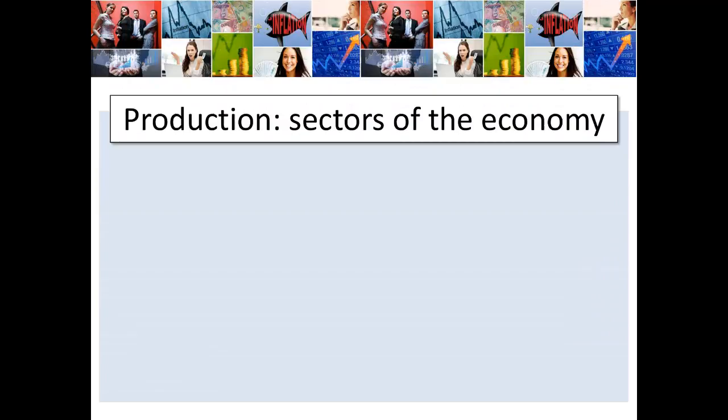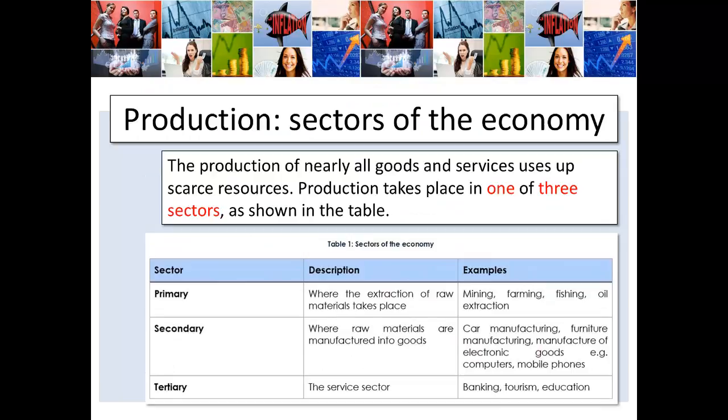The production of nearly all goods and services uses up scarce resources, and we have three different sectors of the economy. The primary sector is where the extraction of raw materials takes place — examples include mining, farming, fishing, forestry, and oil extraction. The secondary sector is where raw materials are manufactured into goods — often referred to as the manufacturing sector, with examples such as car manufacturing, furniture manufacturing, and the manufacture of electronic goods like computers and mobile phones. The tertiary, or services, sector covers things performed for other people — examples include banking, insurance, tourism, education, and healthcare.